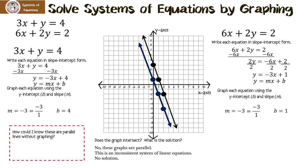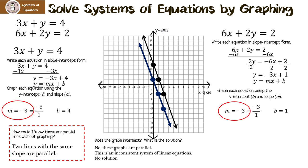How could you know these are parallel lines without graphing? If you notice, these two lines have the exact same slope — that means they're parallel. The difference between the two lines is their y-intercept: the first has a 4 and the second has a 1. That makes them parallel.